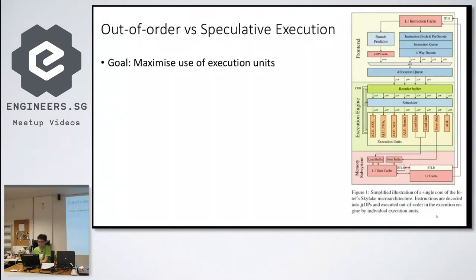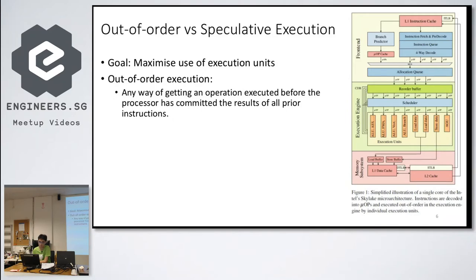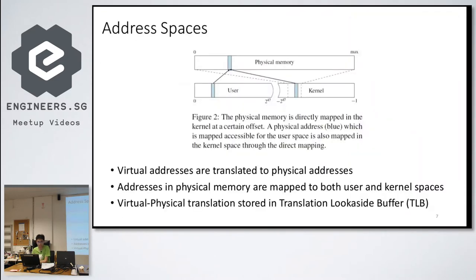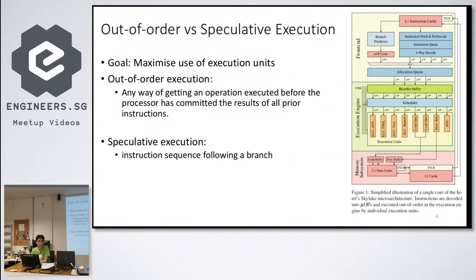The terms out-of-order and speculative execution — what is the difference? This is the architecture of a modern Intel Skylake processor. You can see there are many execution units. The goal of modern CPUs is to maximize the number of execution units being used at any one time. They bring in out-of-order execution, defined as any way of getting an operation executed before the processor has committed the result of prior instructions. Speculative execution specifically refers to an instruction sequence following a branch.